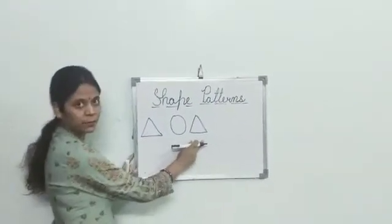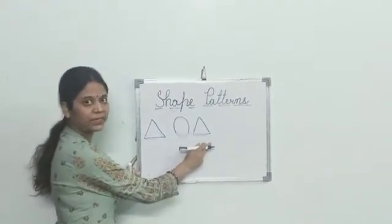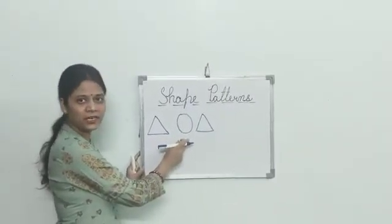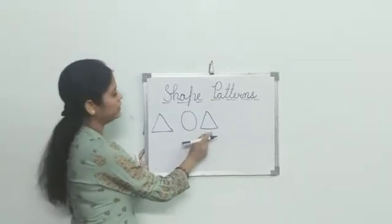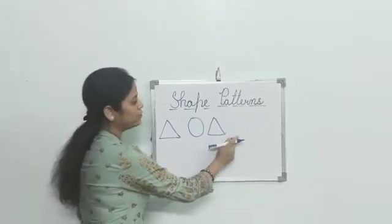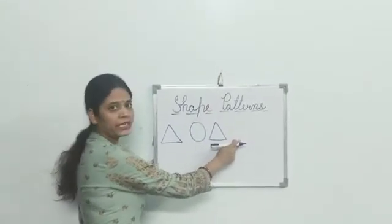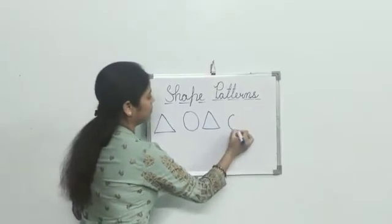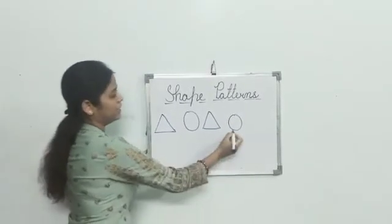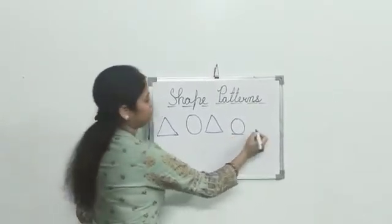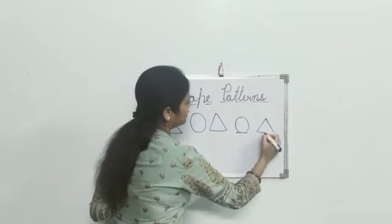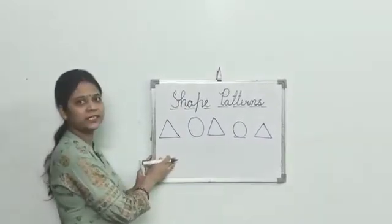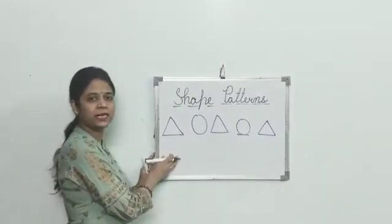We take one more example of shape pattern. First shape is triangle, second is circle, then triangle. Now tell me — which shape comes here? Yes, circle. Next, after circle — yes, triangle. It means it is the shape pattern.